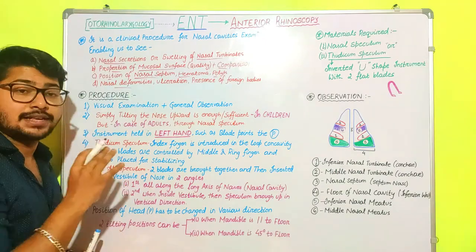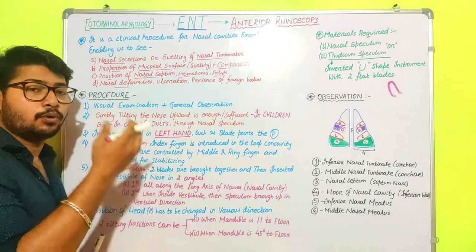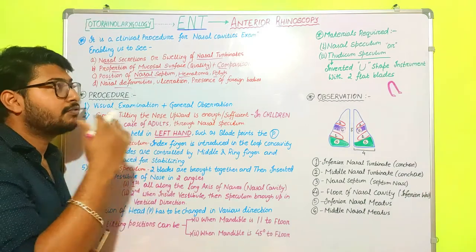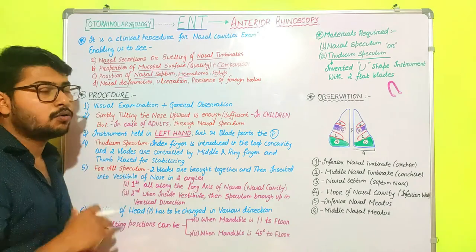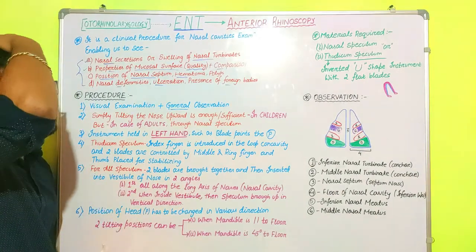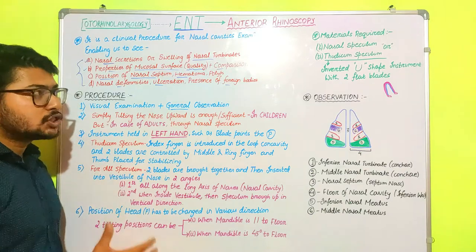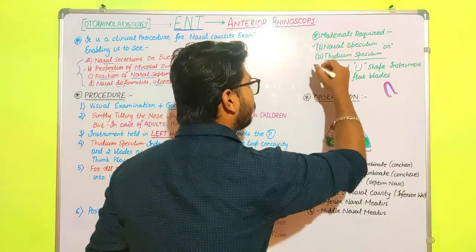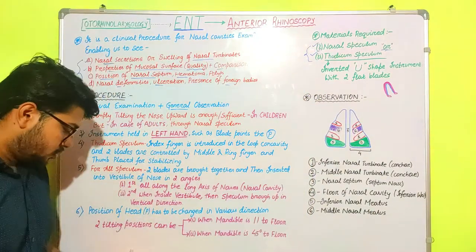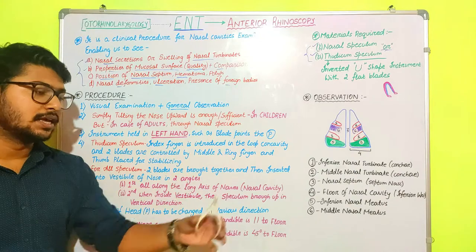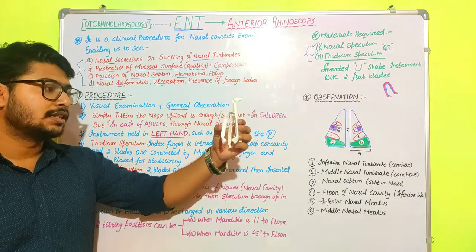This method can only identify pathologies in the anterior part of the nasal cavity. If the pathology is in the posterior part, we will require posterior rhinoscopy, which we will discuss in the next video. For materials, we require two important instruments: either a nasal speculum or a thudicum speculum. I am holding the nasal speculum, and I have made the thudicum speculum from paper.